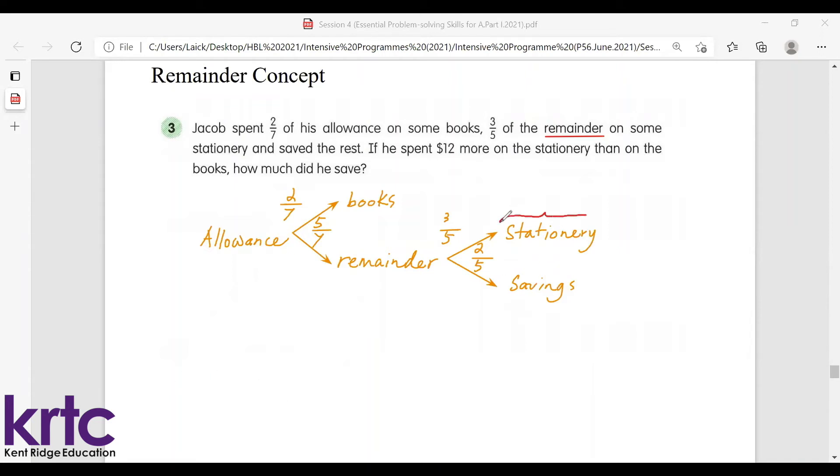So I will have to work out the amount of fraction of the allowance that's used to buy stationery. So I have three-fifths multiplied by five-sevenths, that will be three-sevenths.